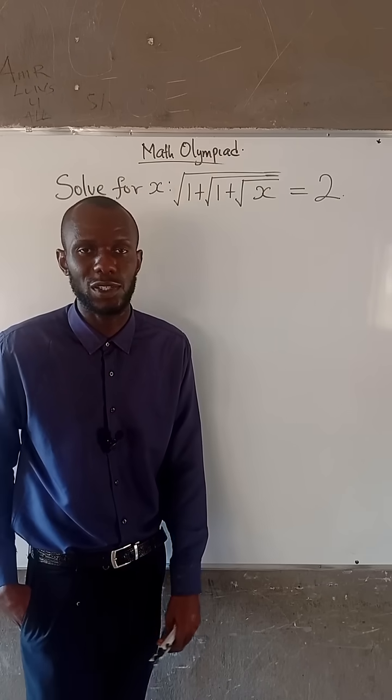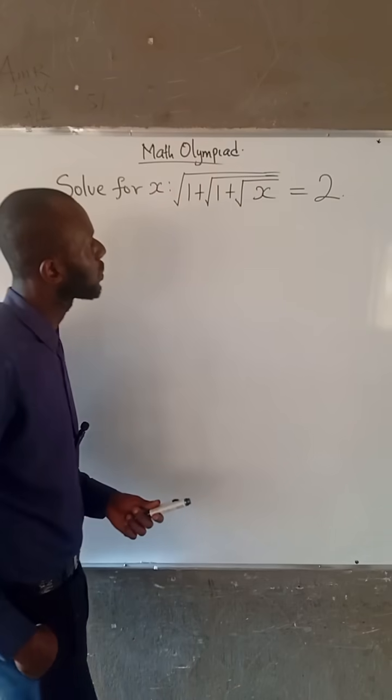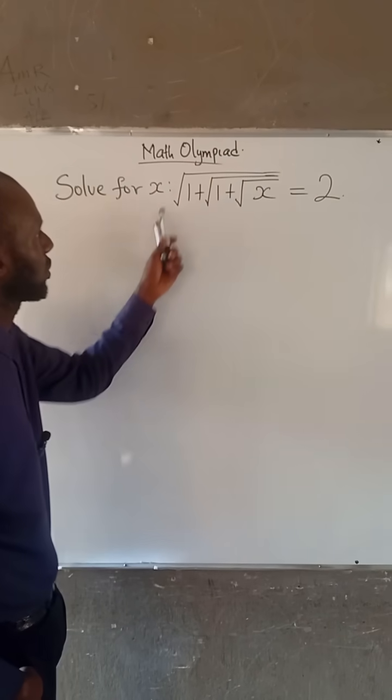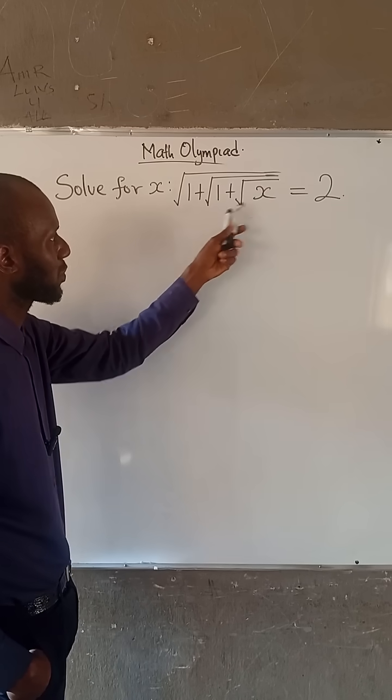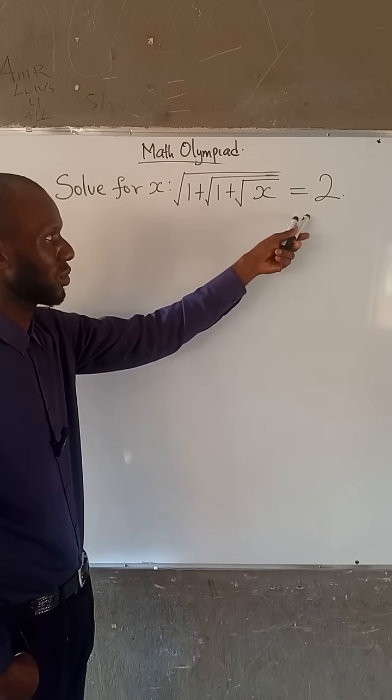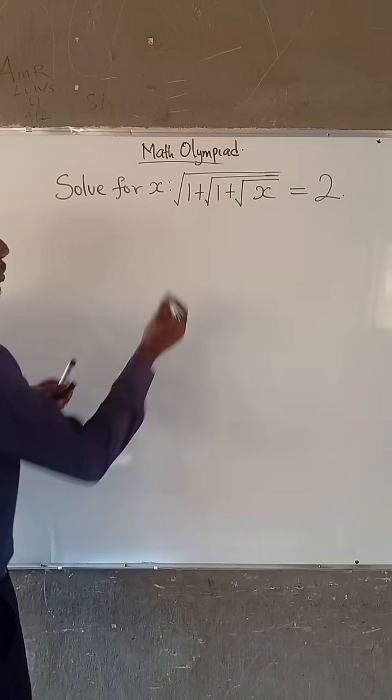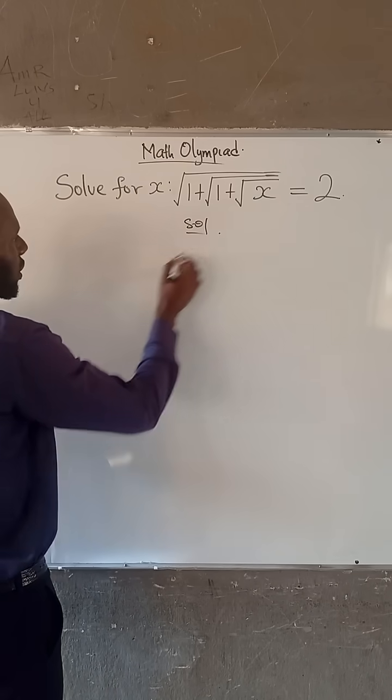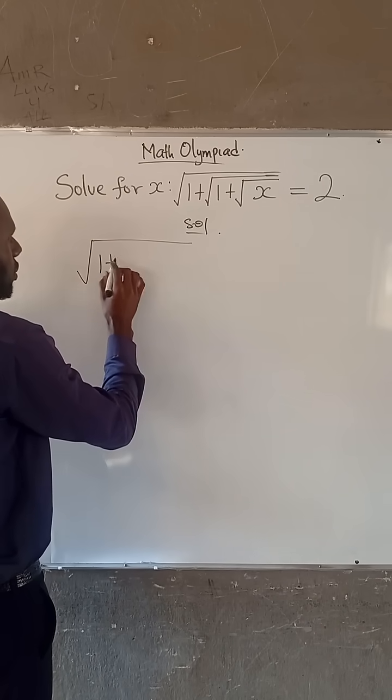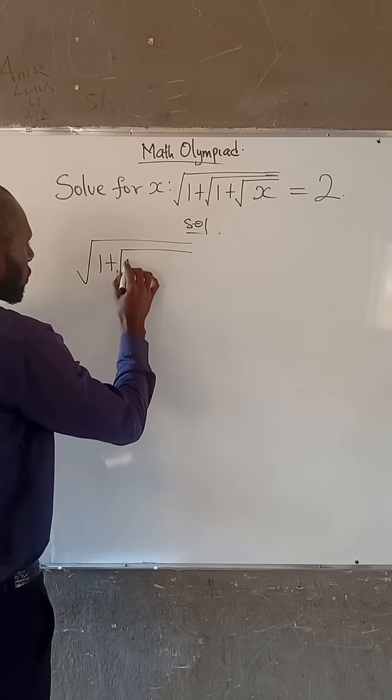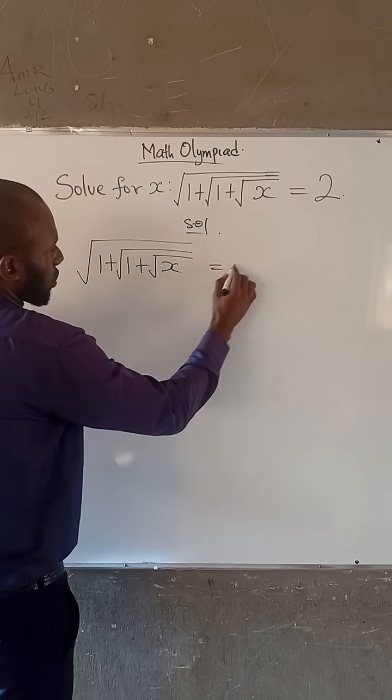Hello everyone, let's provide a solution for this Math Olympiad problem. We are given that the root of 1 plus the root of 1 plus root of x equals 2. So we have a nested root on the left hand side. We have that root of 1 plus root of 1 plus root of x equals 2.